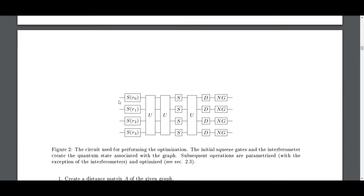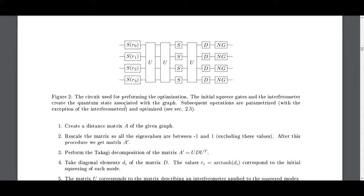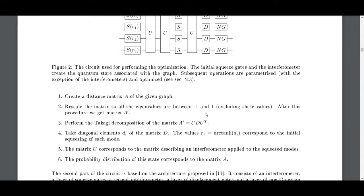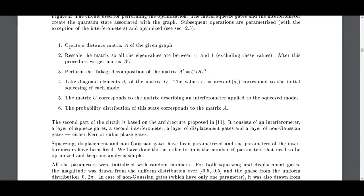This first part is what we saw, and then here's the circuit used to perform the optimization. The initial squeeze gates and the interferometer create the quantum state associated with the graph. The subsequent operations are parameterized with the exception of the interferometers and optimized. The recipe is: create a distance matrix, rescale it so the eigenvalues are between one and minus one, perform the Takagi decomposition, take diagonal elements of matrix D which correspond to the initial squeezing of each mode. The matrix U corresponds to the interferometer.